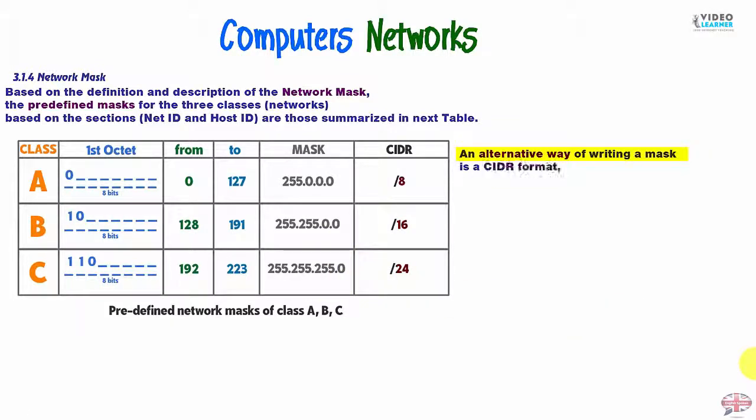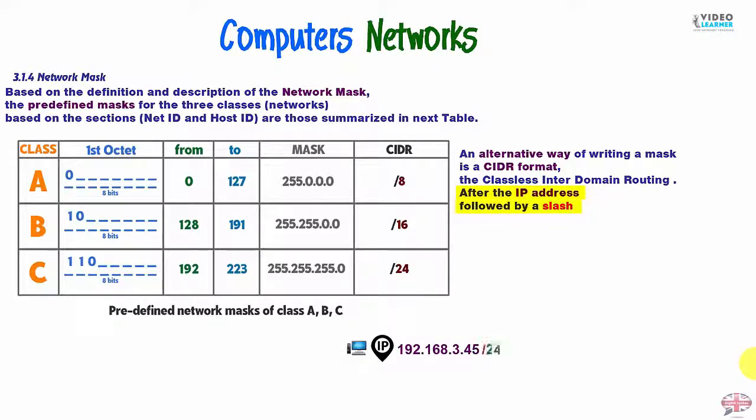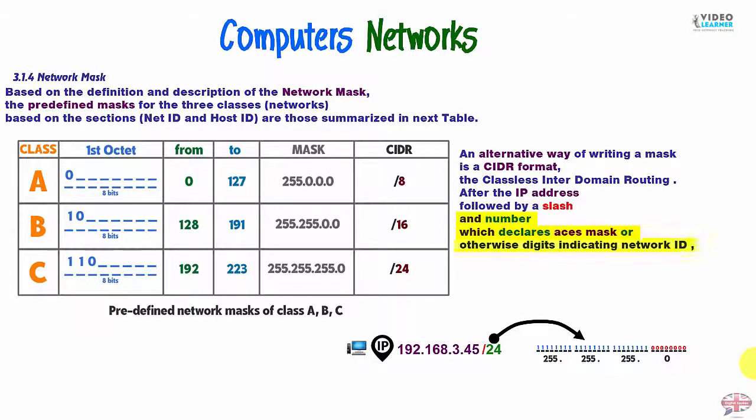An alternative way of writing a mask is CIDR format, the classless inter-domain routing. After the IP address followed by a slash and the number which declares Aces masks, or otherwise digits indicating the network ID. This is the example: 192.168.1.12/24. So we have 24 Aces and 8 zeros.